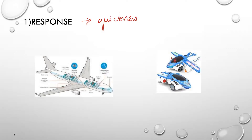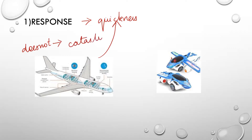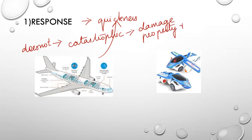Now how should this embedded system work in flight? It should respond very quickly. For example, if there is something wrong in the flight, the system should respond very quickly. If it does not respond, it leads to a catastrophic effect — meaning it causes damage to both property and life. So the embedded system in flight should work very quickly. That is called as the response. This is a critical system.